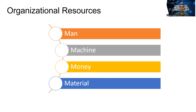Among those several resources, I have included the main ones here: man, machine, money. Other than that, space, time, method, and procedures — everything we can consider as resources. These are the resources in any kind of organization.